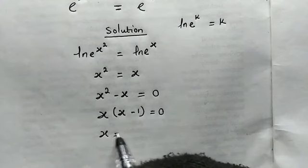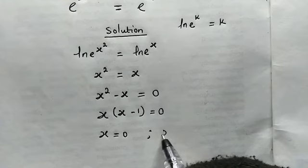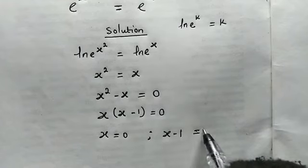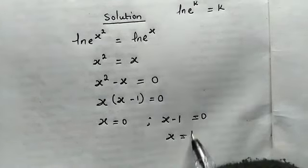So from here we have x equals 0, or the quantity in the bracket x minus 1 equals 0. From here we have x equals 1.